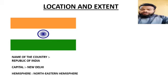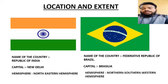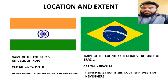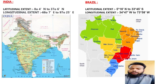Now let's talk about Brazil. The location of Brazil spans the Northern, Southern, as well as the Western hemisphere, because some portion goes into the North hemisphere, some portion goes into the South hemisphere, and some portion is also in the Western hemisphere. The latitudinal extent of Brazil is 5 degrees 15 minutes north to 33 degrees 45 minutes south, and the longitudinal extent is 34 degrees 45 minutes west to 73 degrees 45 minutes west.